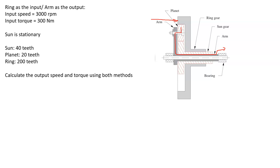What we're being asked to do is calculate the output speed coming from the arm and the output torque. We need a method of calculating the velocity ratio — what's going to happen to the 3,000 rpm input and what's going to happen to the 300 Newton meters of torque as it comes through this design setup.